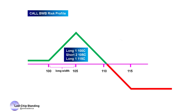Now let's look at a Broken Wing Butterfly using call options. In this example, we will buy a 100 and 105 call vertical and sell a 105 and 115 call vertical. The vertical we bought has a width of 5 points and the vertical we sold has a width of 10 points, which is twice as wide as the vertical we bought. Also notice the same short strike of 105 in both of the verticals.